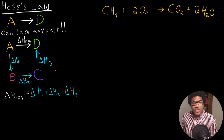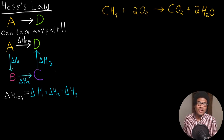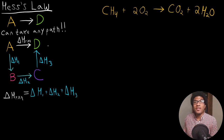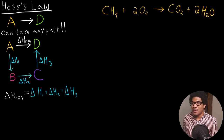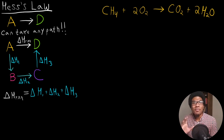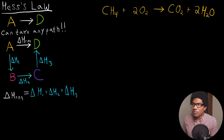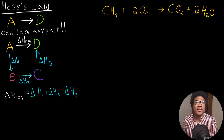In this video, we're going to discuss Hess's law and how we can calculate the enthalpies of reaction using standard enthalpies of formation. This idea of Hess's law relies on the fact that enthalpy is a state function. So if we're after the enthalpy of a particular reaction, we can take any path to get there. For example, if we have some reaction where reactant A is going to some product D, we can take any path to get there to calculate the enthalpy of this reaction.